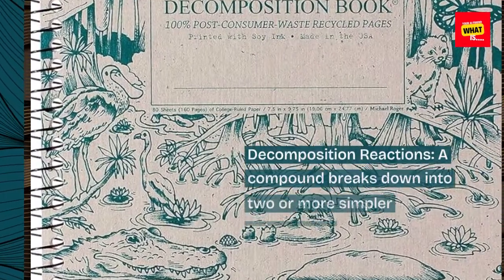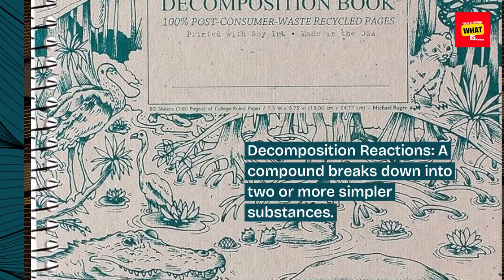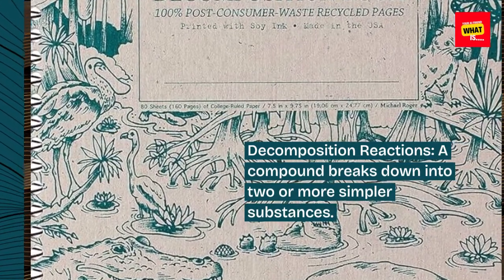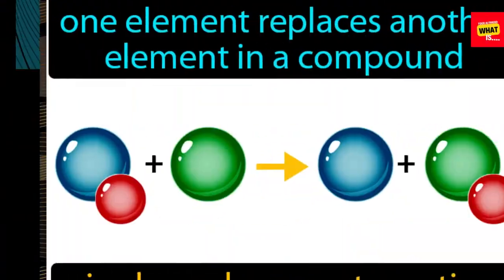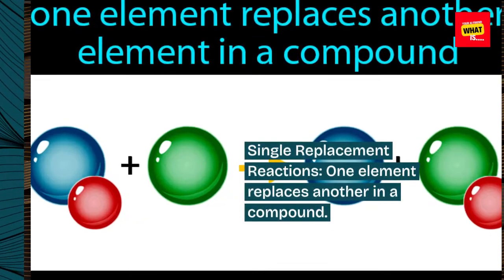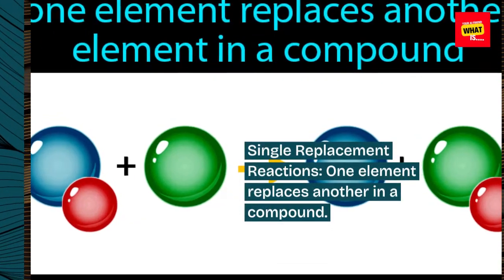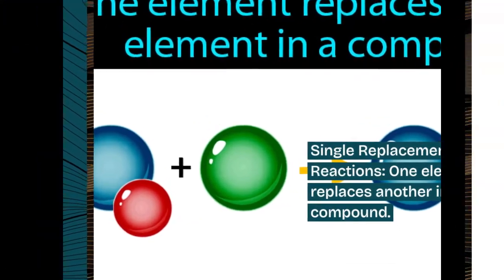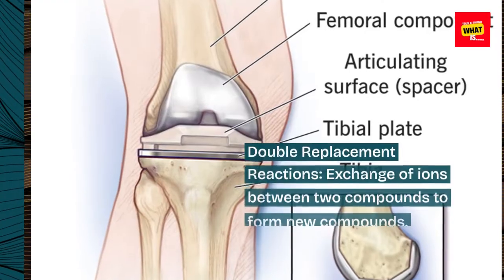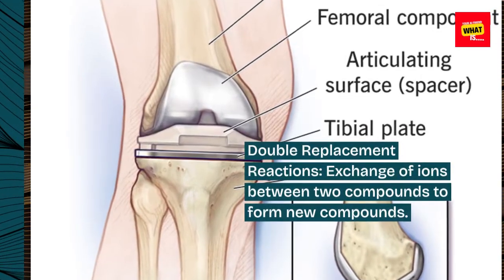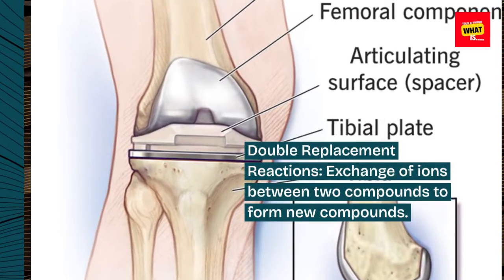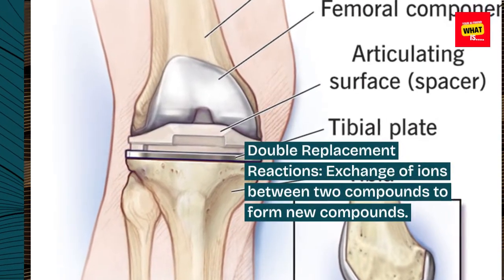Decomposition reactions: a compound breaks down into two or more simpler substances. Single replacement reactions: one element replaces another in a compound. Double replacement reactions: exchange of ions between two compounds to form new compounds.